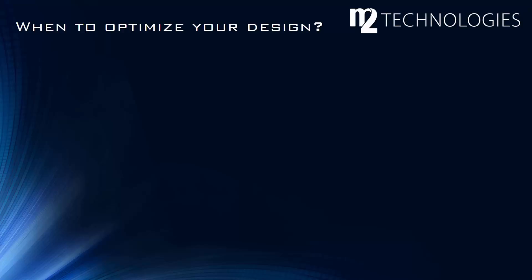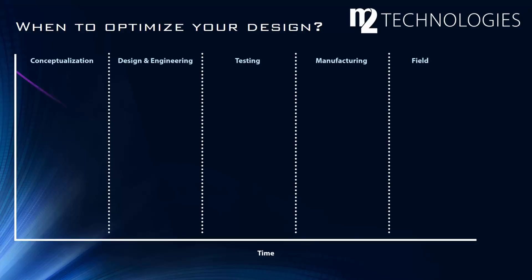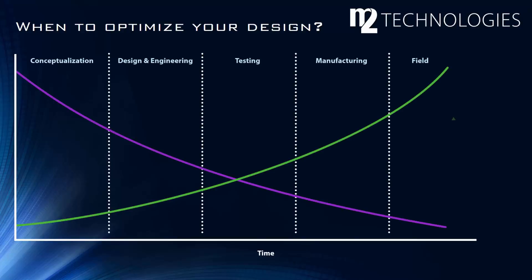When is the best time to simulate and optimize your design? Over the product development lifecycle, the ability to affect functional capabilities declines as the cost of making changes increases. The best time to identify failure modes is during the design and engineering phase, when the design is still flexible enough to make necessary changes and the cost of those changes is minimized.